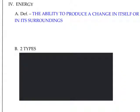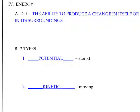The next thing we're going to talk about is energy. The definition for energy is the ability to produce a change in itself or in its surroundings. There are two types of energy — you've probably heard of both of these. Potential energy is considered to be stored energy, and whenever an object is moving, it has kinetic energy.